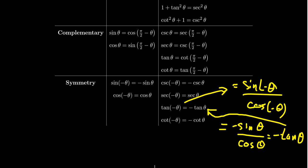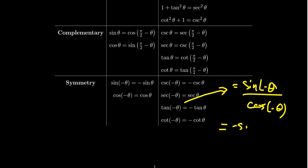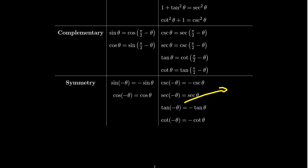These are our fundamental identities — zooming out so you can take one last look at them. We have the reciprocal, ratio, Pythagorean, complementary, and symmetric identities. These are the ones you need to know. You don't necessarily need to know all the children because, as we illustrated, they can be easily derived from these fundamental identities.